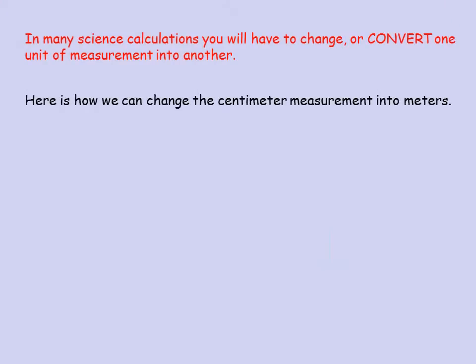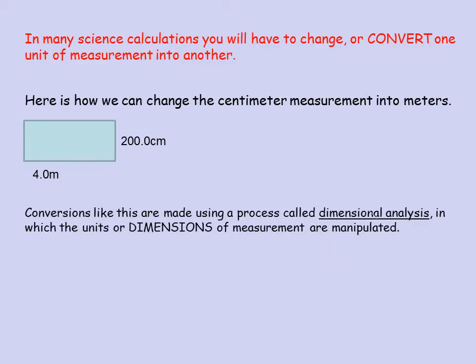Here's how we can change the centimeter measurement into meters. Conversions like this are made using a process called dimensional analysis, in which the units or dimensions of the measurement are manipulated. Dimensions such as 4 meters or 200 centimeters — the dimension is the unit of measurement. We're going to manipulate those in this process of dimensional analysis, meaning we analyze the dimensions in the problem.